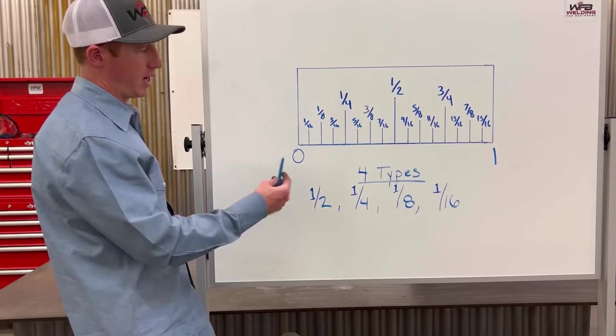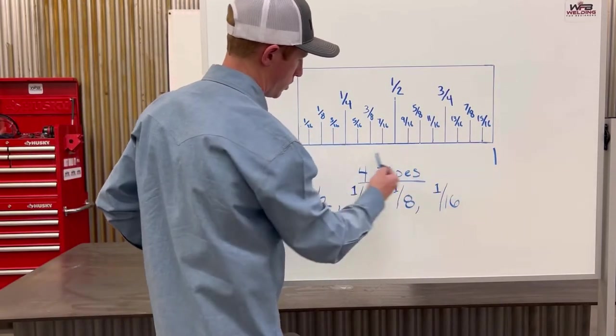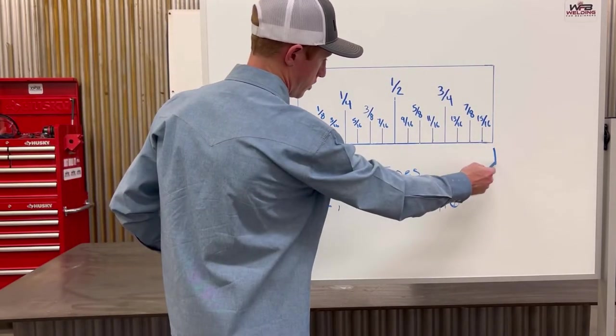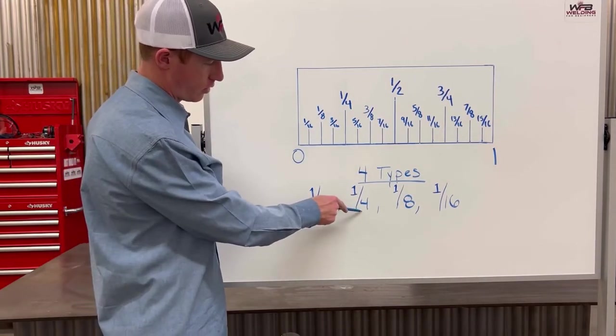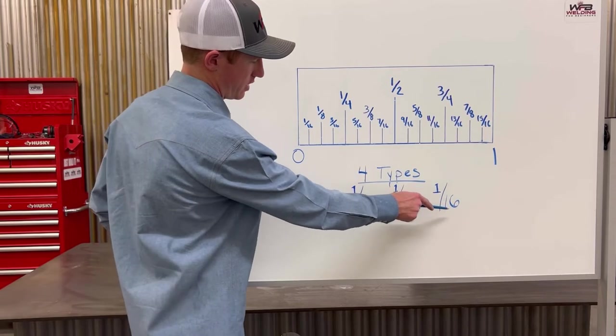It's pretty simple. For example, you have obviously your one inch, so this is a solid inch. From there, you have your halves, your quarters, your eighths, and then your sixteenths.